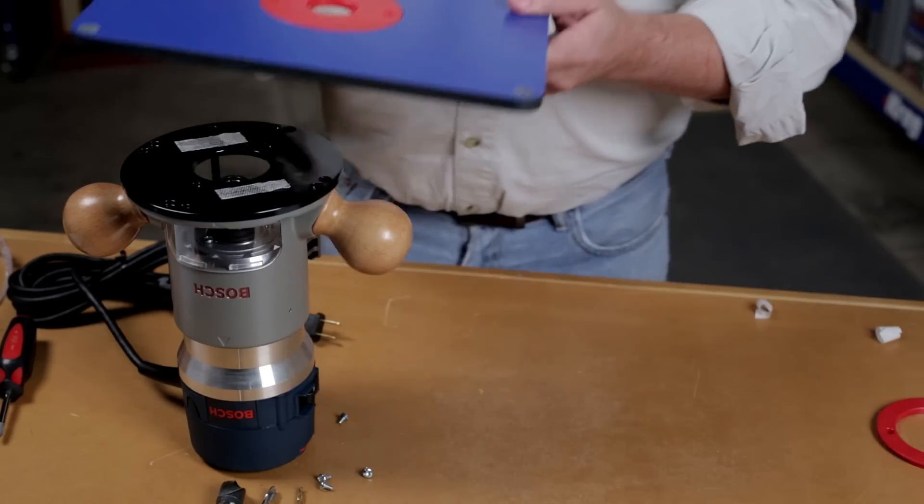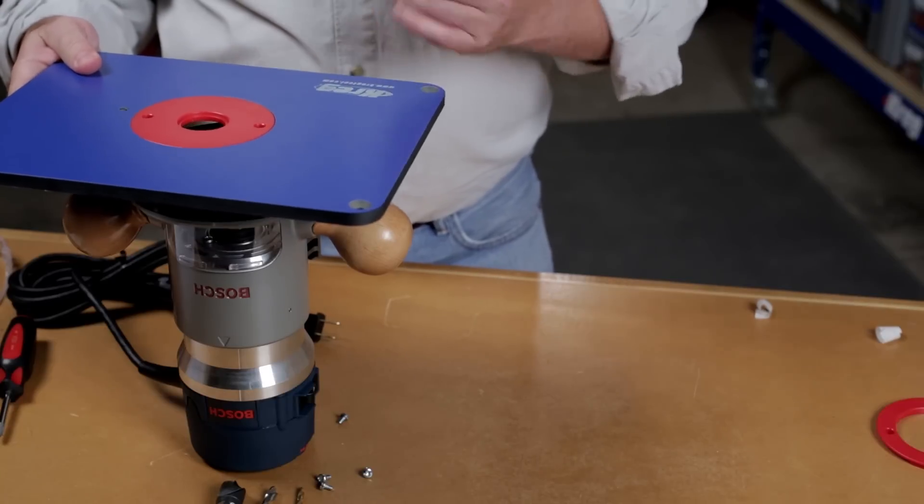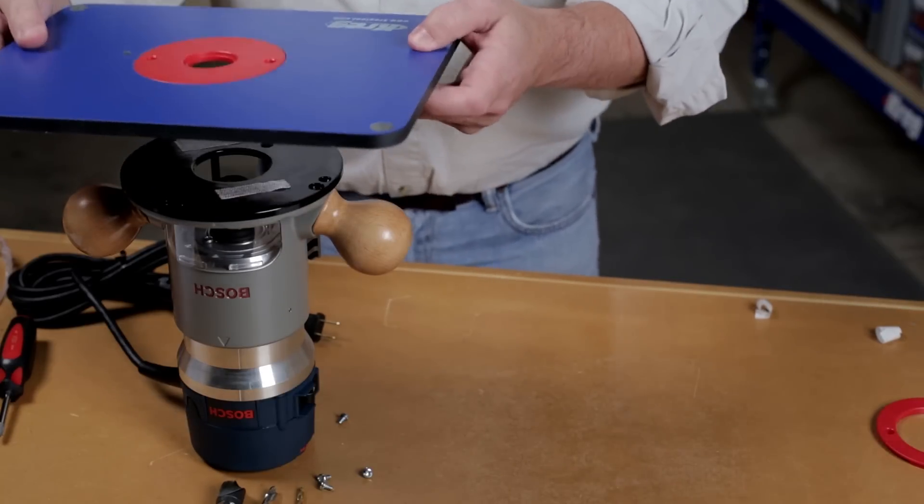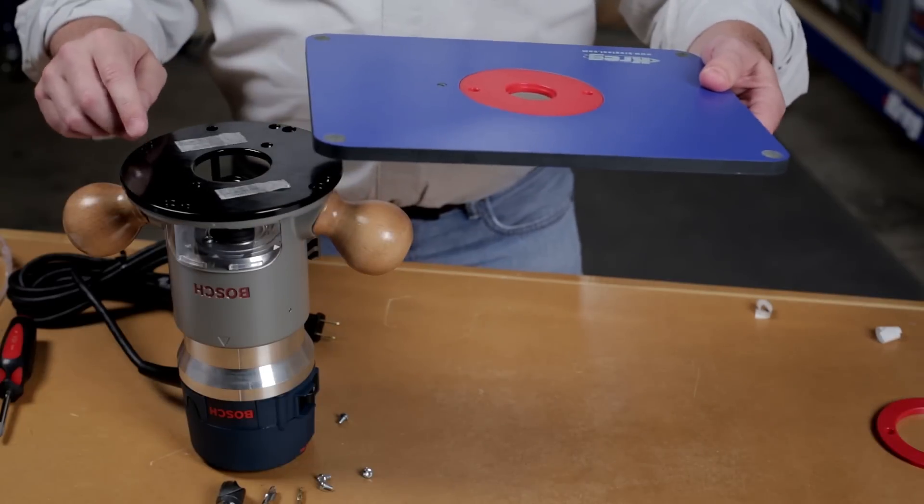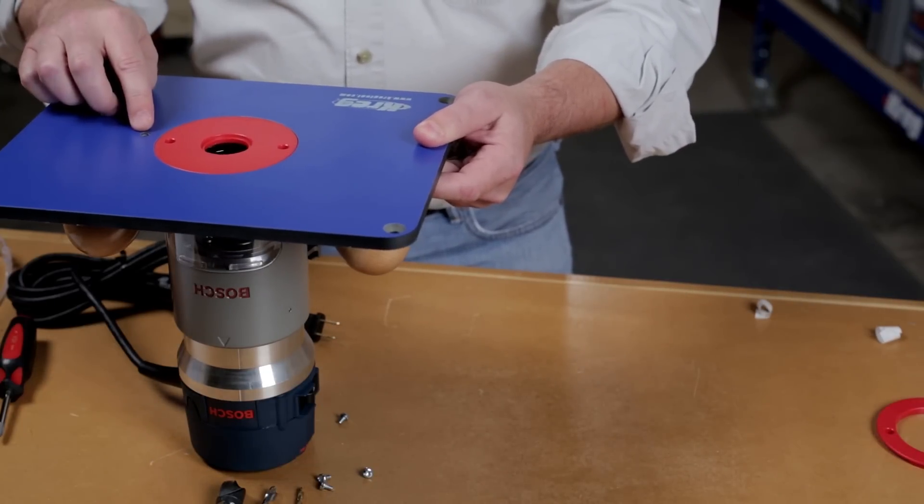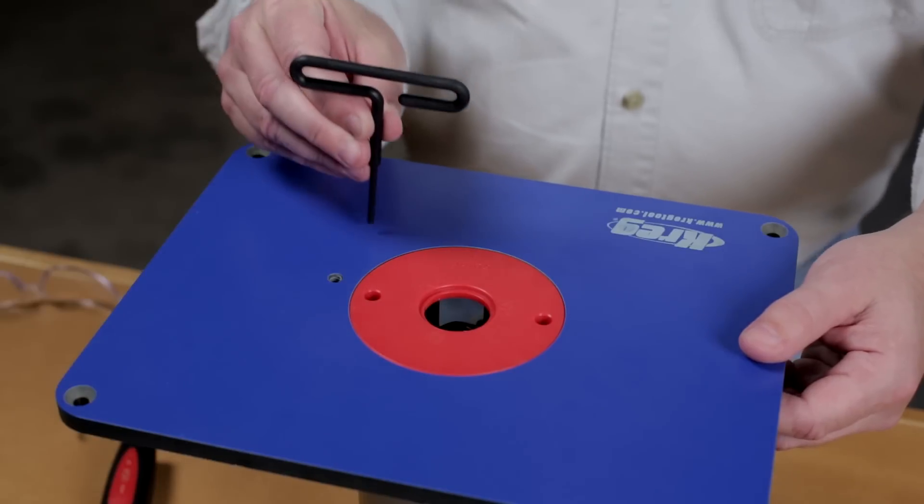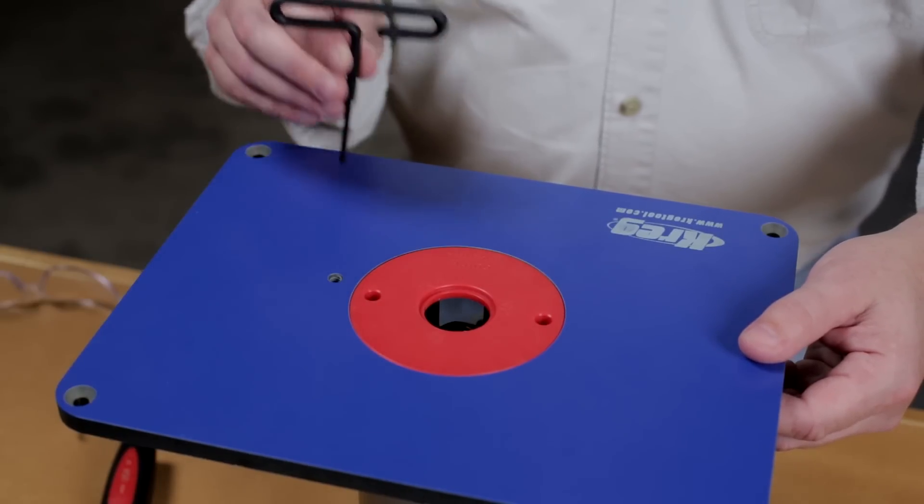Next, grab the plate and bring it up so that you have the Craig logo facing toward you. Hold it in place and look to see if any of the mounting holes are going to interfere with either the start pin hole or, if you have one, the hole for the height adjustment crank.